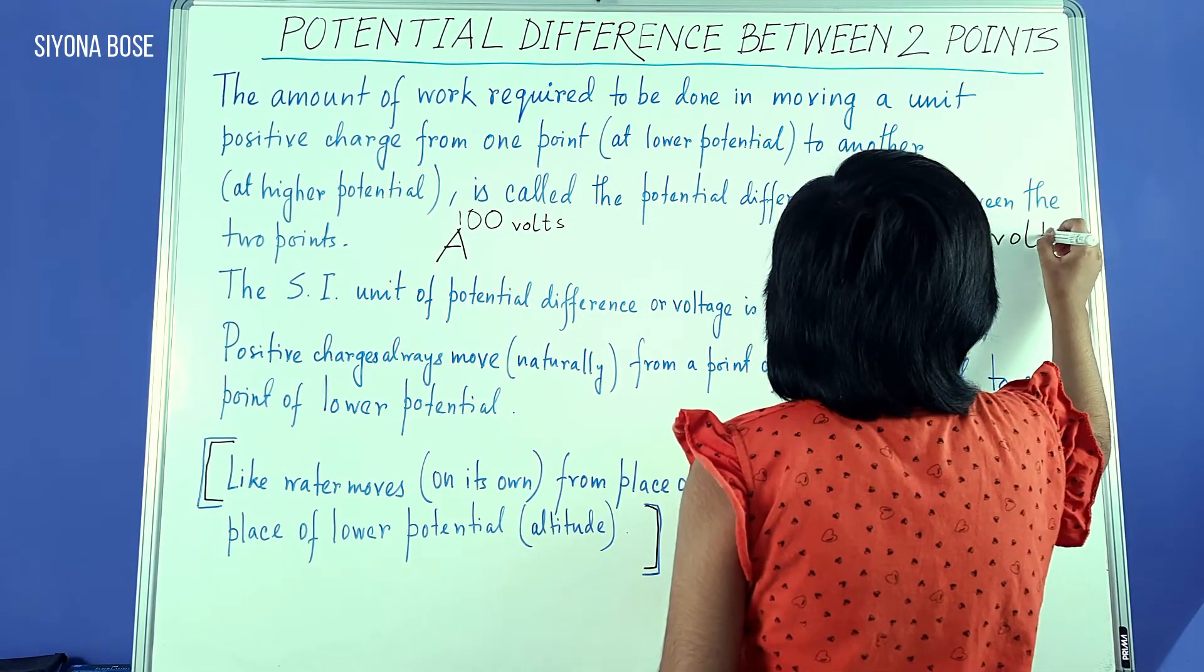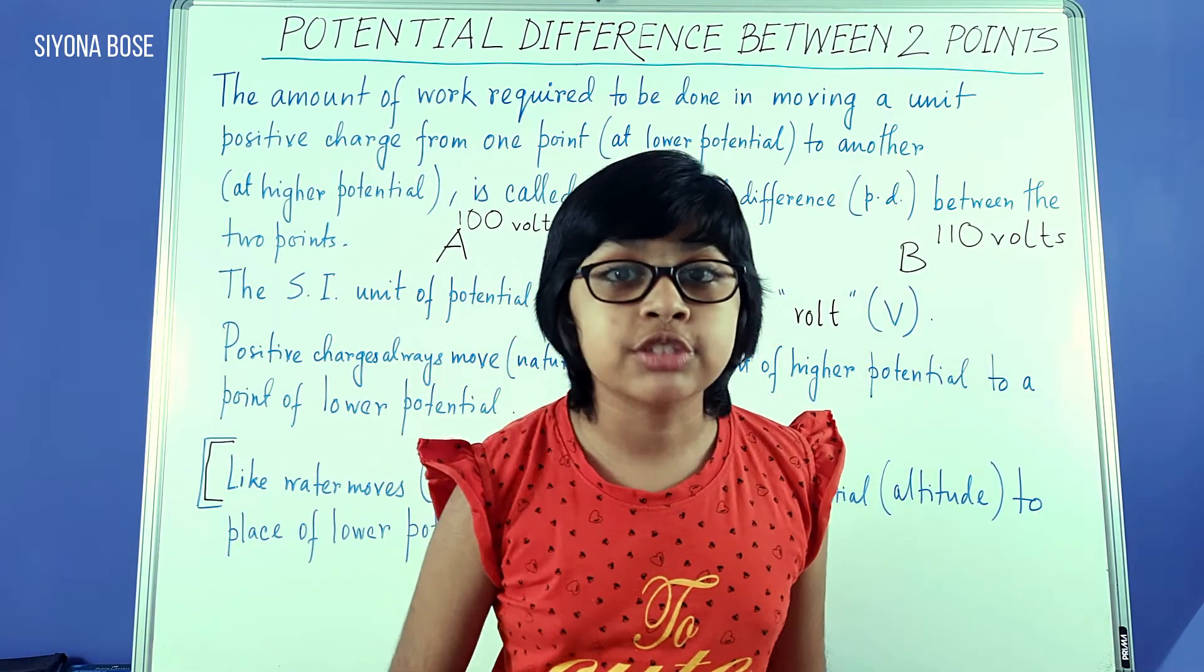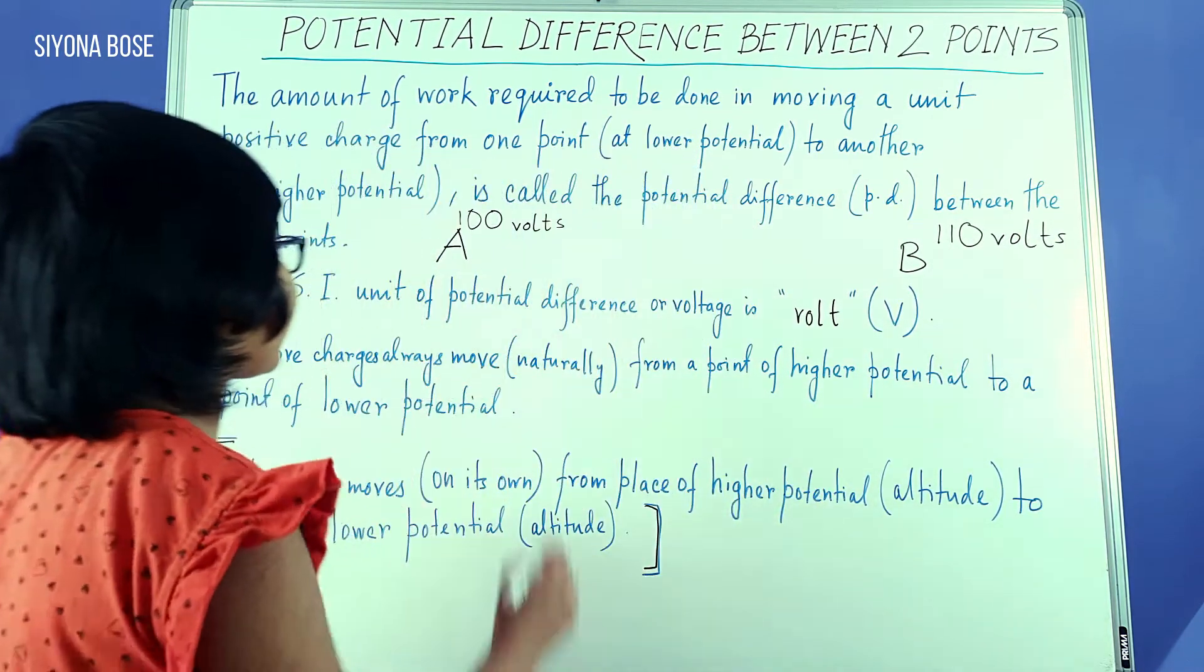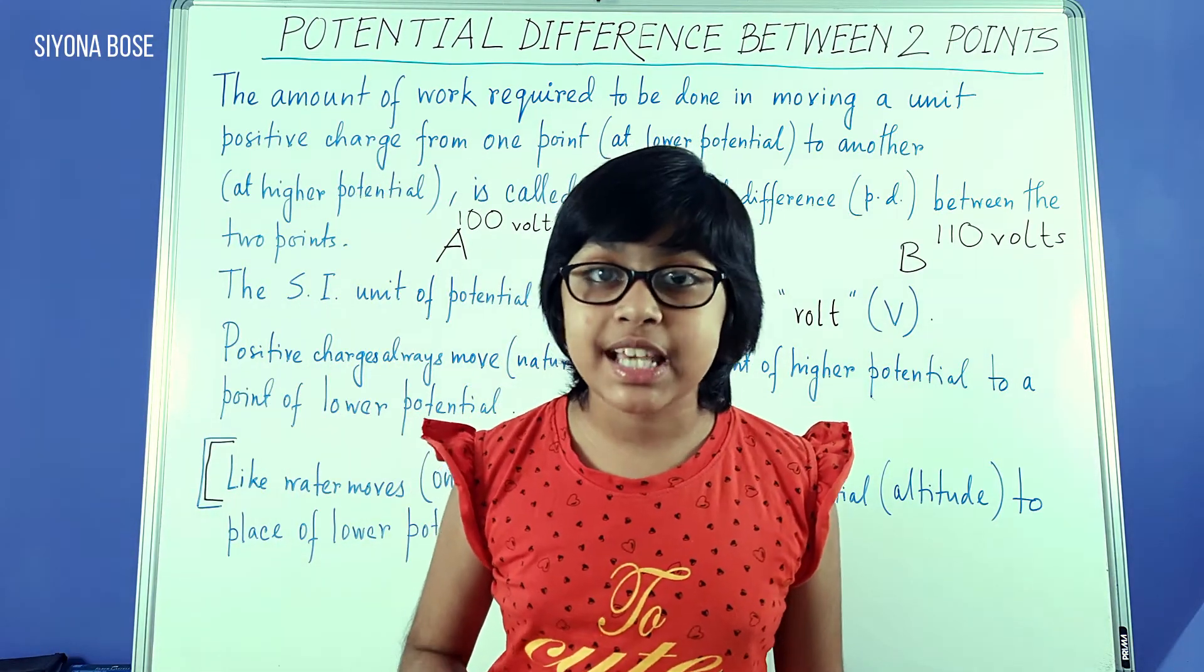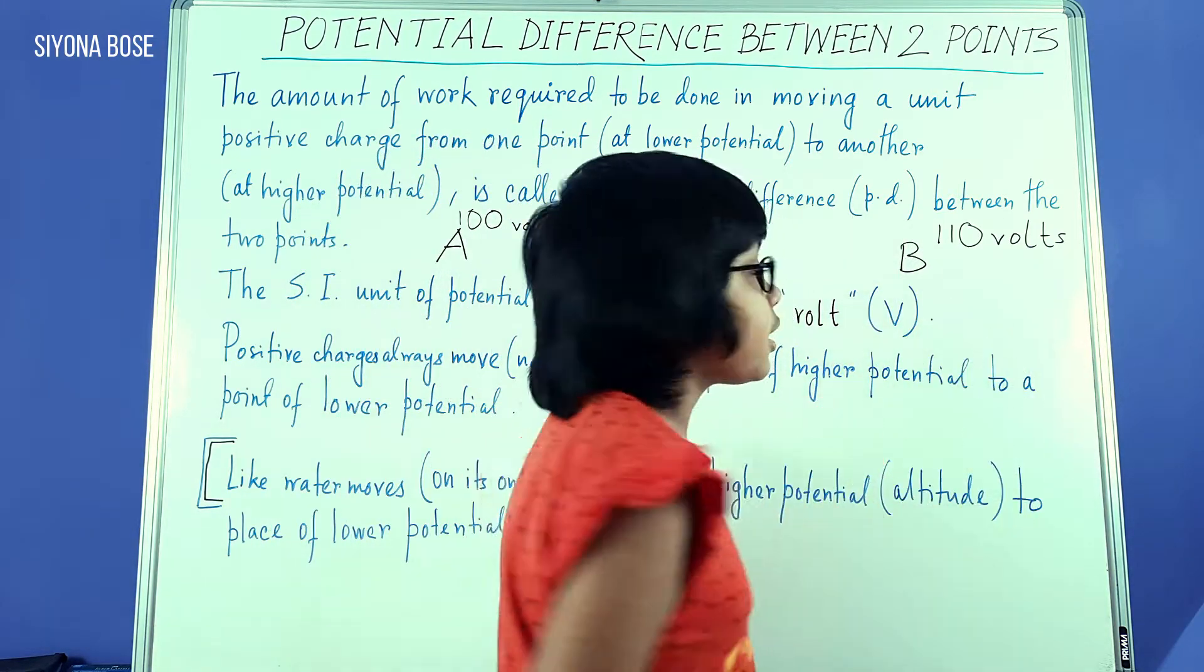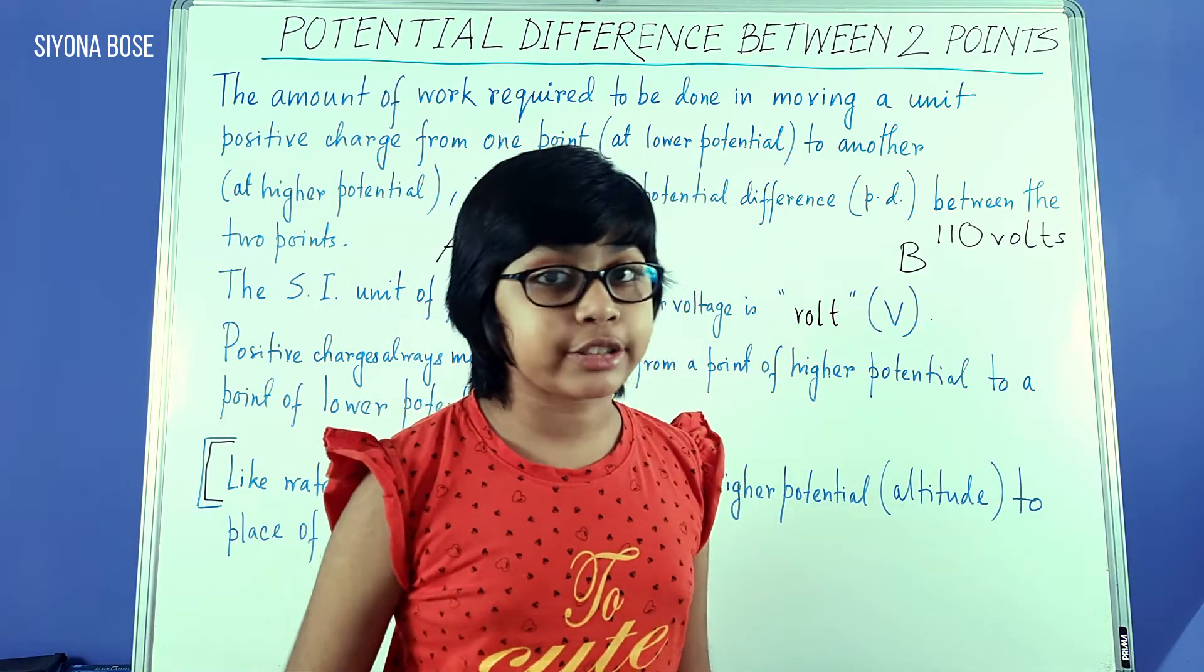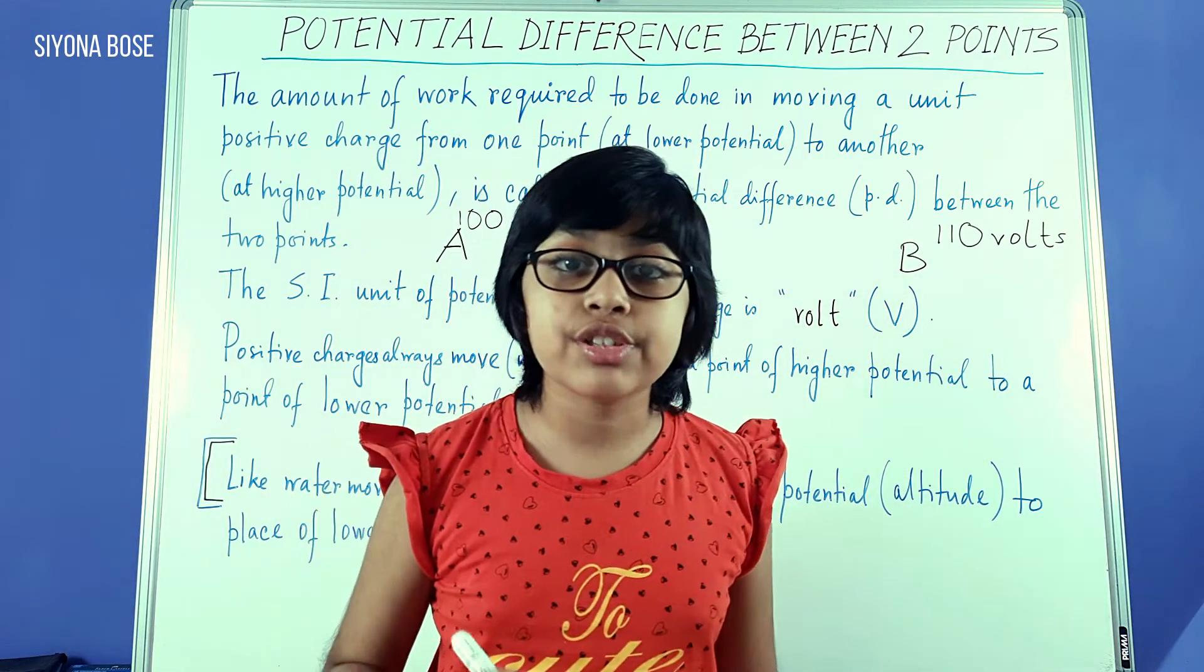Which means? What it means is that to bring in the unit positive charge from infinity to point A, it took 100 joules of work, so the electrostatic potential at that point is 100 volts. And to bring the unit positive charge to B, the point B in the same electric field, it took 110 volts, that means 110 joules of work, hence the electrostatic potential at that point is 110 volts.